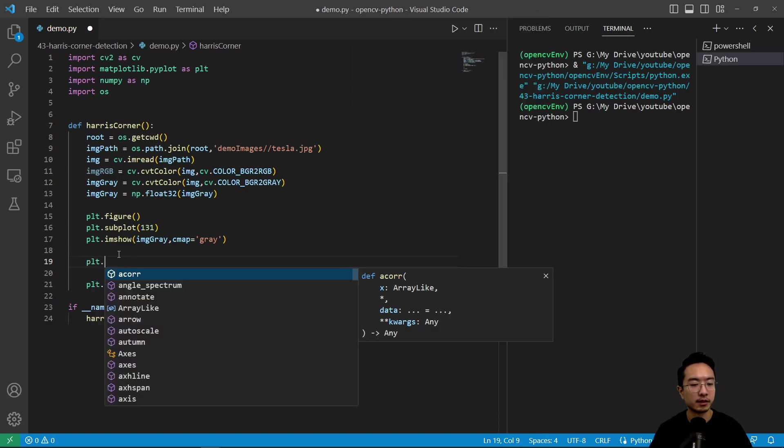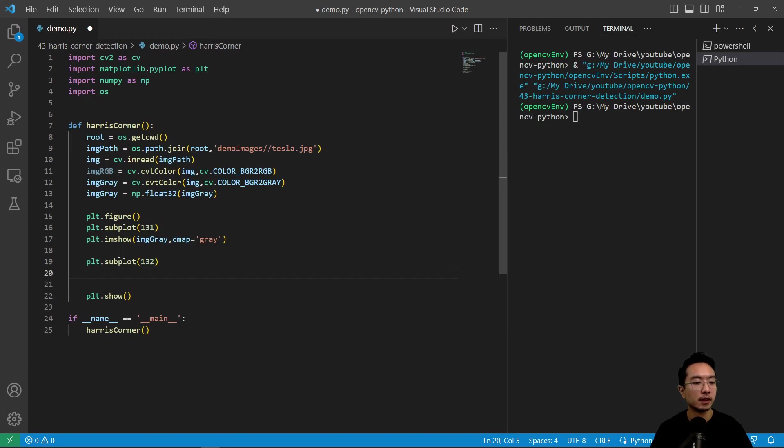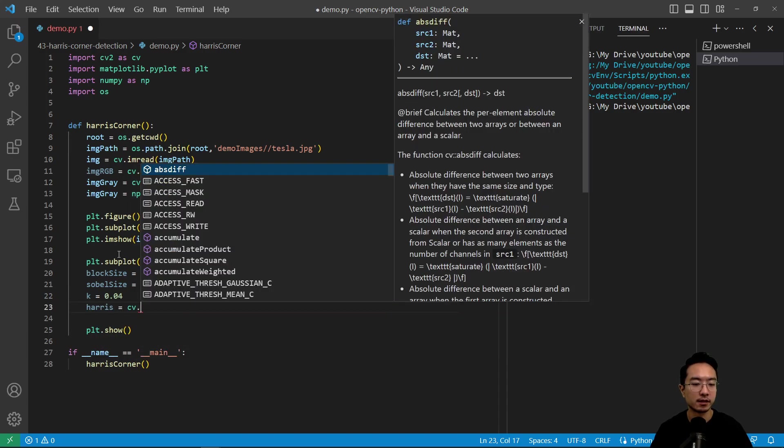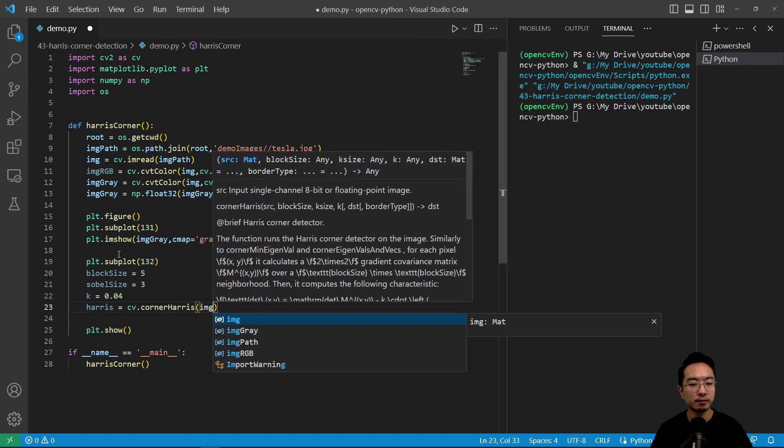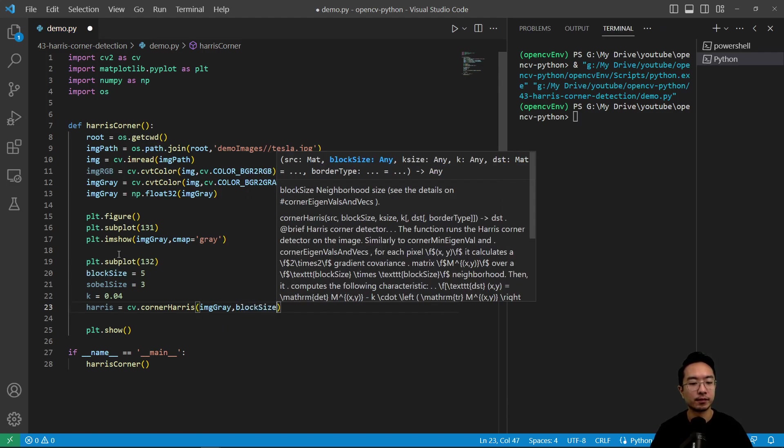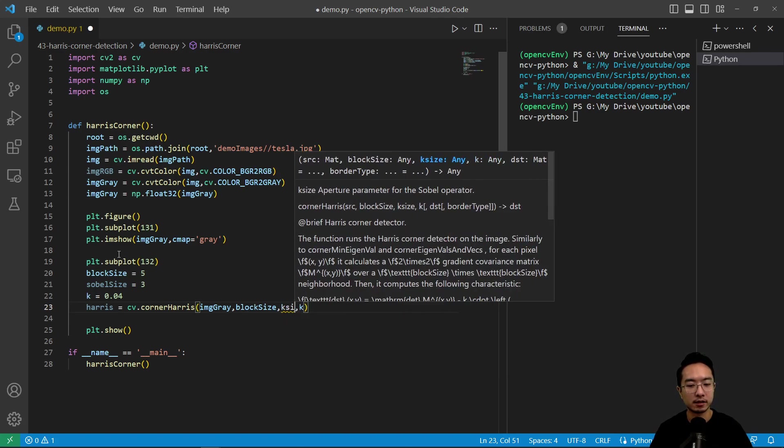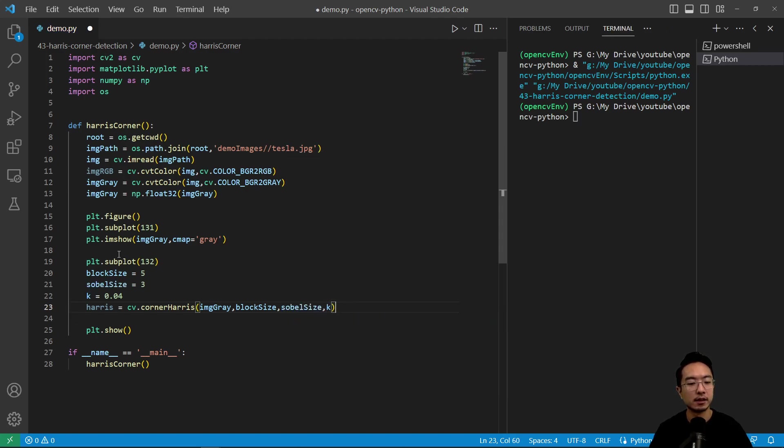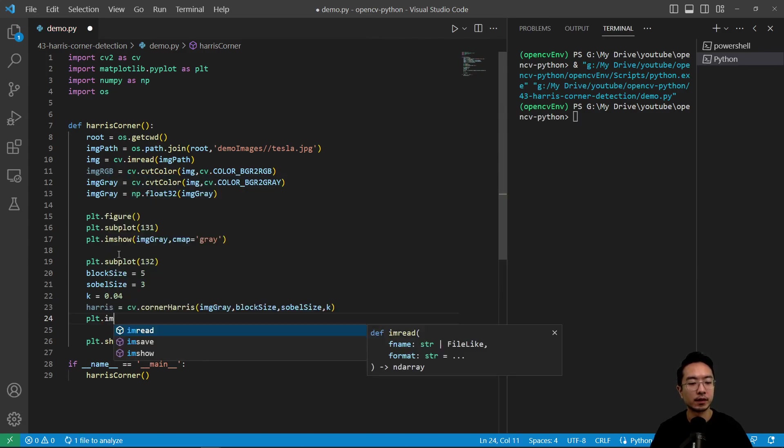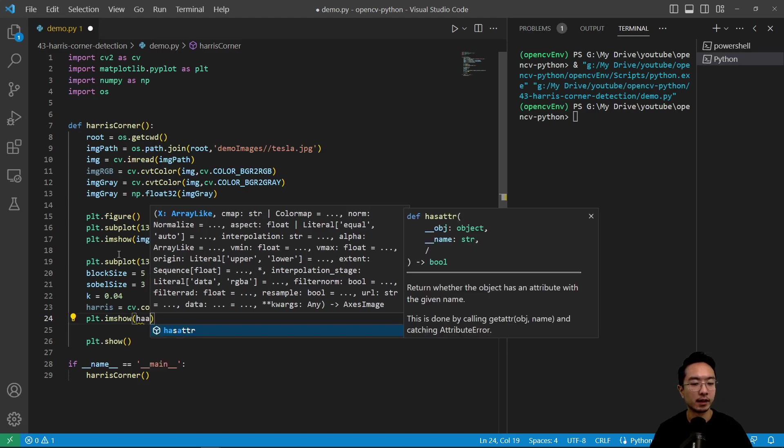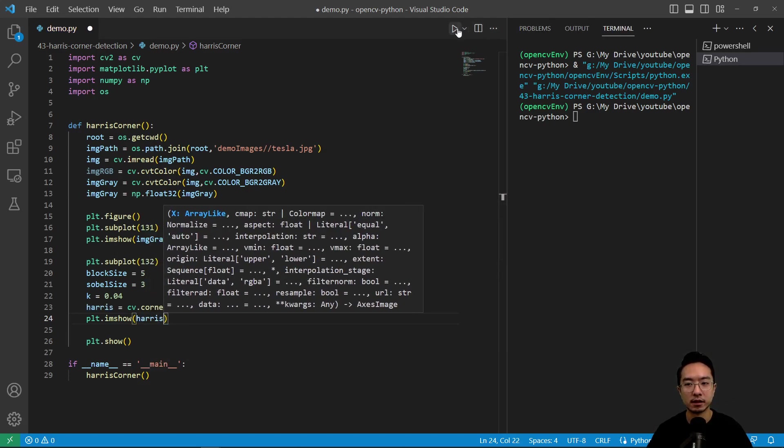Now we can go ahead and run the Harris Corner plt.subplot 132, and then we're going to define a block size of 5, which we'll use for the Harris, and the Sobel size for the gradient calculation of 3, and k is our value that we could play around with, but we'll start off by using 0.04. And now we can call the Harris using cv.cornerHarris, pass in our grayscale image, the block size, and then the ksize, and then the k value. So that's our Harris, and we do plt.imshow, and pass in Harris. Now if I run this, we should see the Harris response.